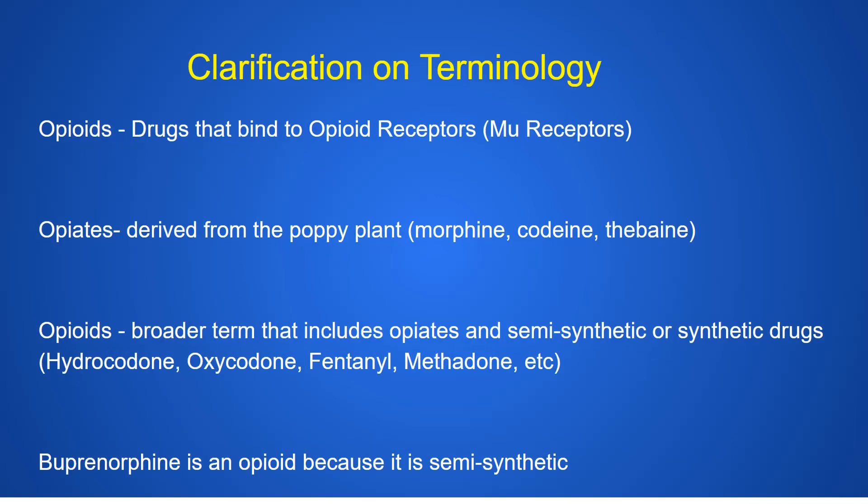A quick clarification on terminology. A lot of people use 'opioids' and 'opiates' interchangeably. Opioids is the broader term. Opiates are derived from the actual poppy plant — we get morphine, codeine, and thebaine from that. Opioids is a broader term that includes opiates and also semi-synthetic or synthetic drugs, where chemists and pharmacologists add methyl groups or make other chemical modifications.